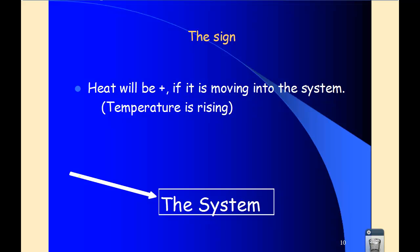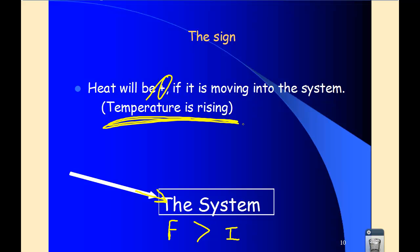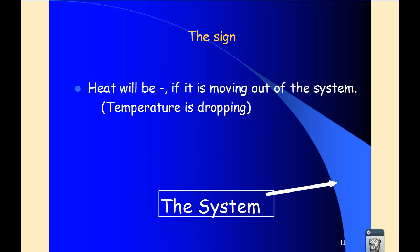Heat can be traveling from the surroundings into the system. If you say initial and final — in the beginning compared to the end — the final amount of heat is going to be greater than it was initially. So you're going to have more heat in the system than when you started, giving a positive value. When heat moves into the system, you get a positive value and the temperature of the system rises. If the opposite were true — if heat is leaving the system — your initial amount of heat is greater than your final, so you're losing heat from the system to the surroundings, and the temperature of the system drops.